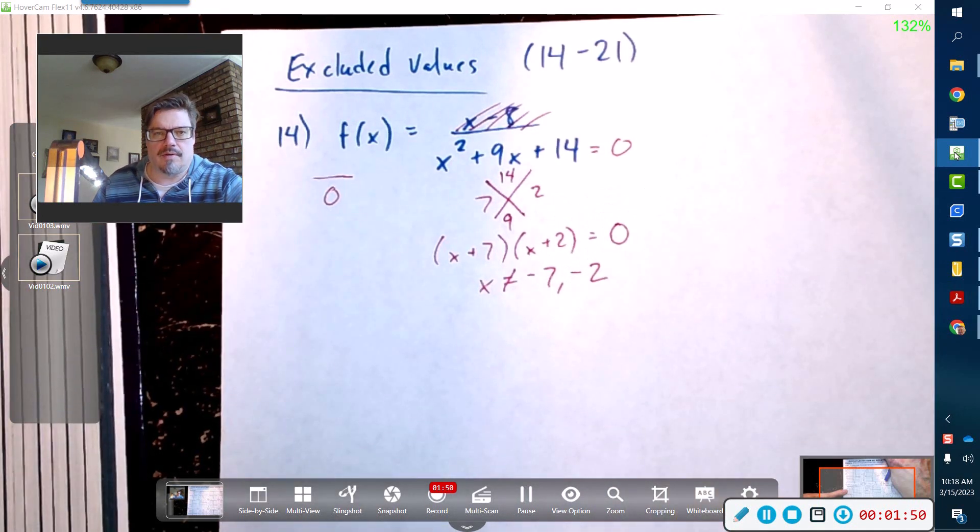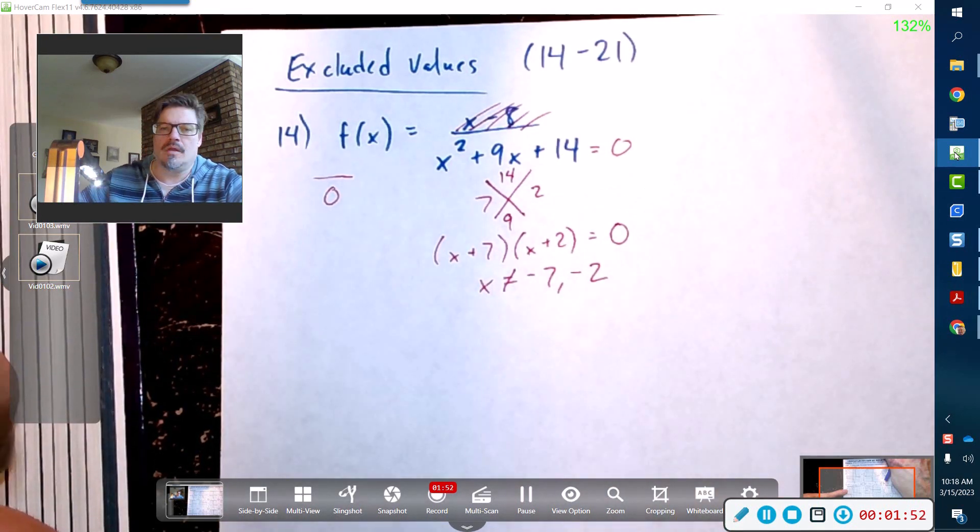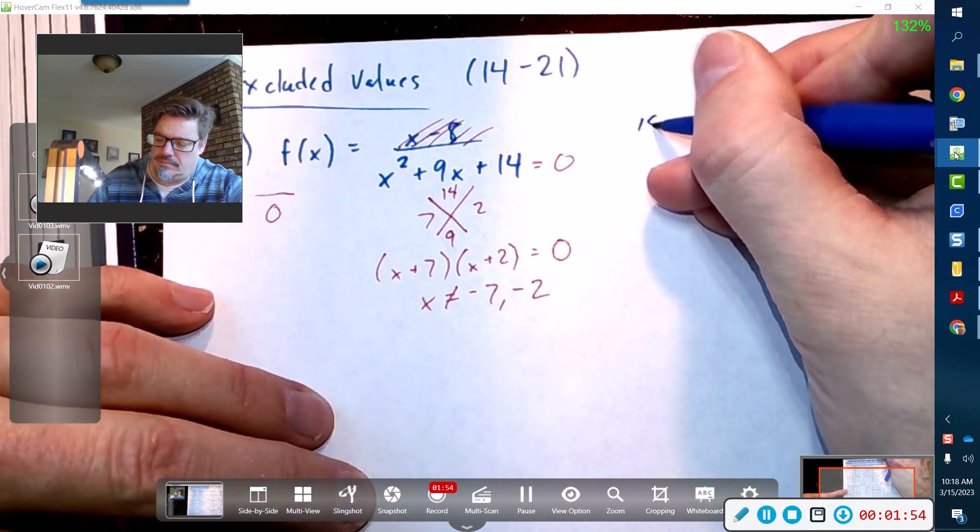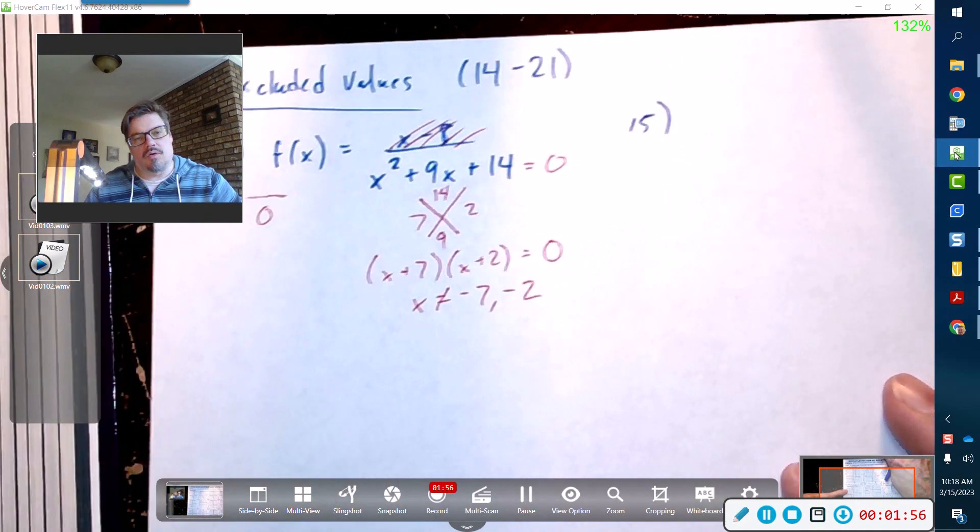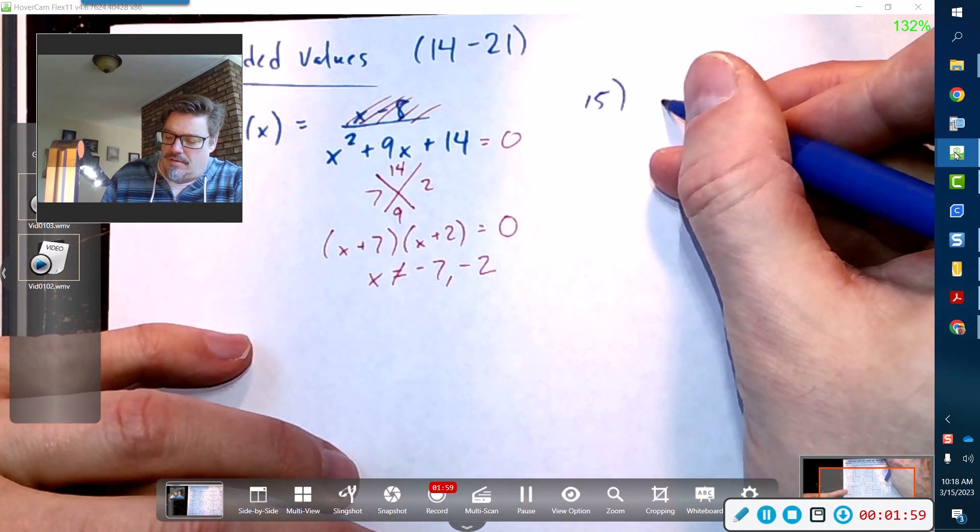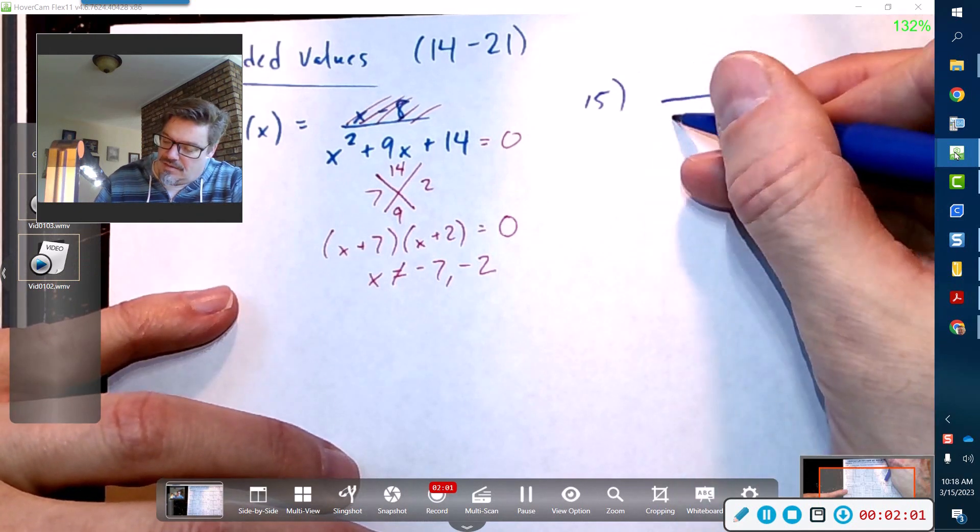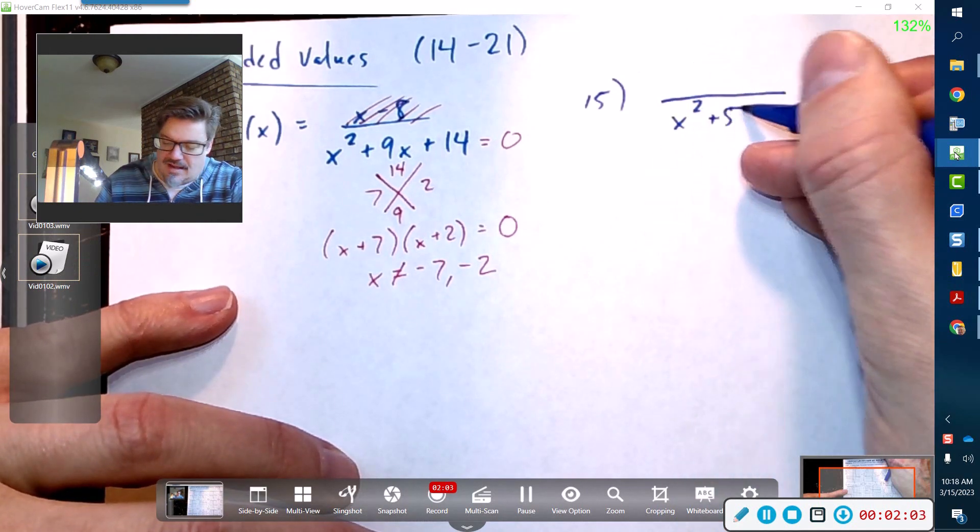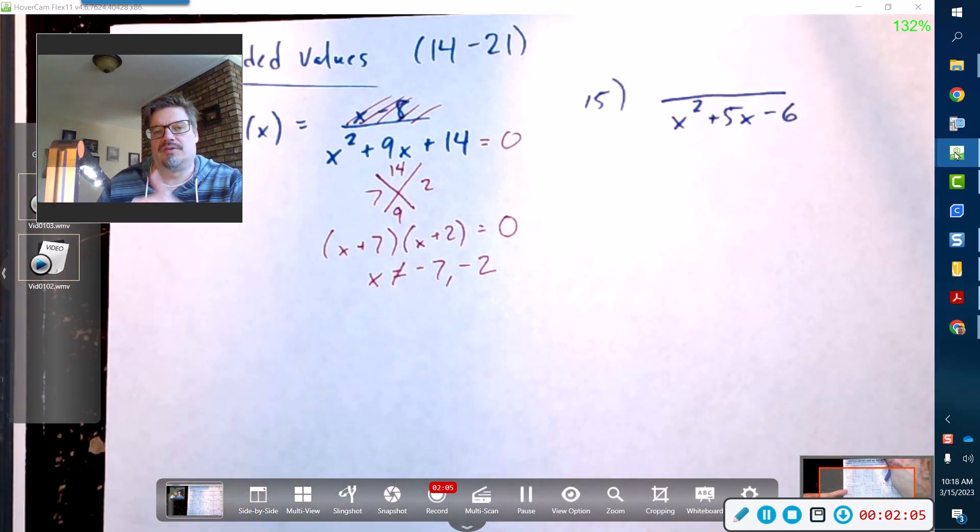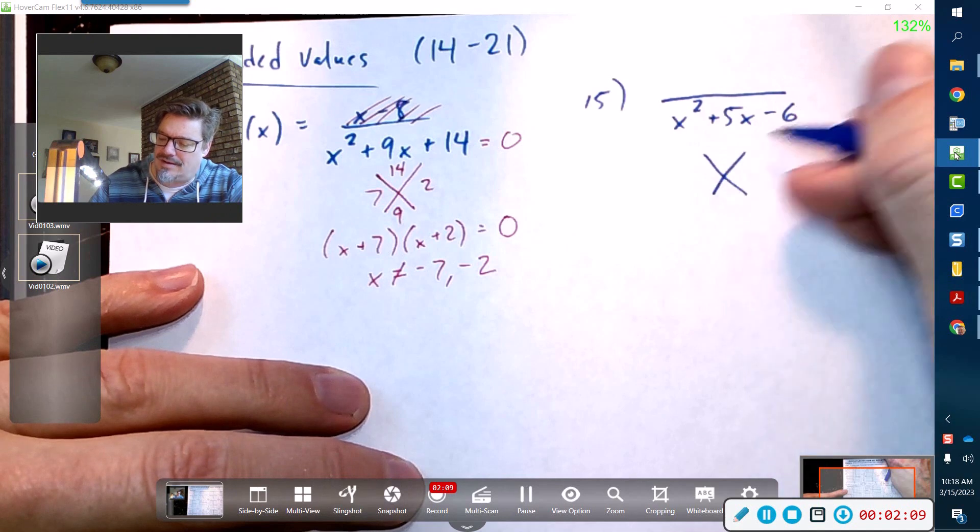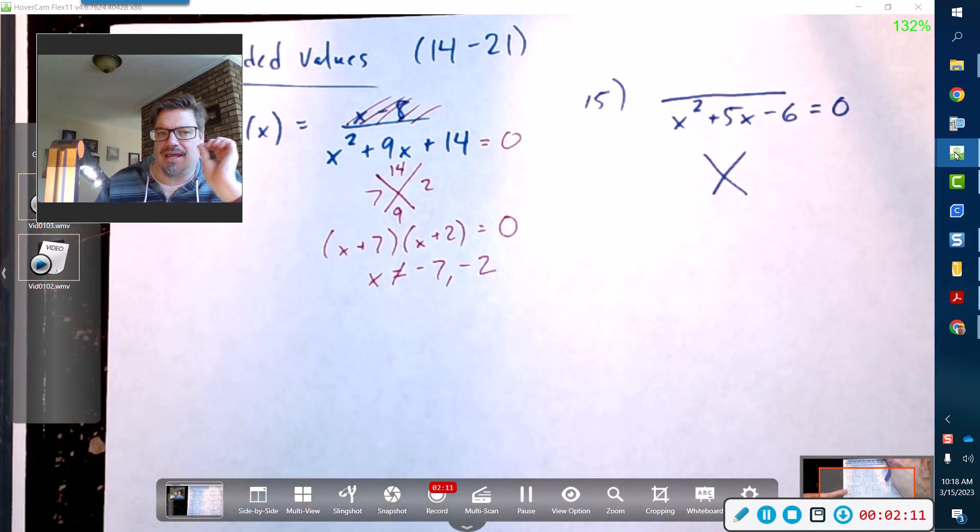Now for problem 15, I'm going to go a little quicker because I just want you to know that I don't have to rewrite the whole problem. I'm just going to hone in on the denominator and find out where does this guy equal zero, because it can't happen.